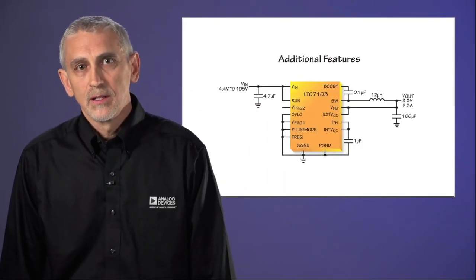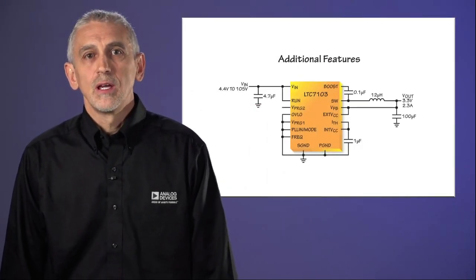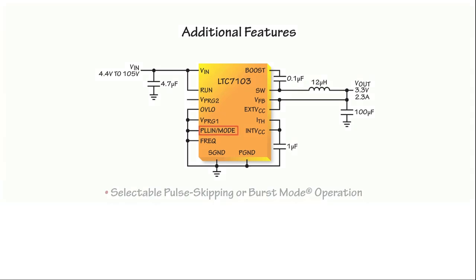At light loads, the LTC7103 can be programmed to operate either in pulse skipping or low ripple burst mode. This allows for the optimization of both efficiency and output voltage ripple during light load operation.